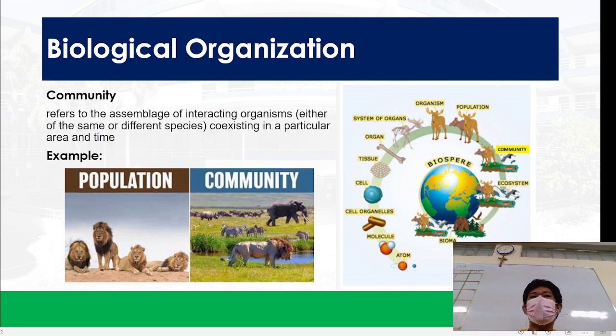And then the next level is a community. Community is different populations - we were talking about lions, and then we have elephants, we have zebras, we have grasses, and all those bacteria in that pond. That's community. Allow me to read - community refers to the assemblage of interacting organisms, either of the same or different species, coexisting in a particular area and time. That's community, so at least we can differentiate population and community. Population refers only to individuals of the same species, while community has many classes of populations that interact with each other.